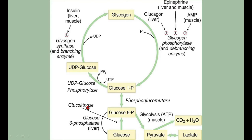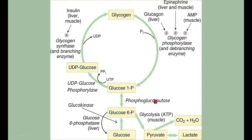In glycogenesis: glucose → glucose-6-phosphate (by glucokinase) → glucose-1-phosphate (by phosphoglucomutase) → UDP-glucose (by UDP-glucose phosphorylase). Many UDP-glucose molecules combine with help of glycogen synthase and branching enzyme to form branched glycogen, releasing UDP at each branch. In glycogenolysis, glycogen phosphorylase adds phosphate to produce glucose-1-phosphate, and debranching enzymes break down the branched structure, which has alpha-1,6 and alpha-1,4 bonds.